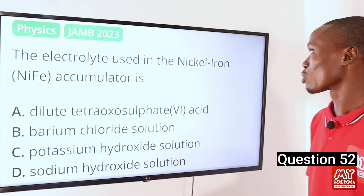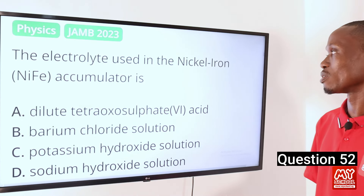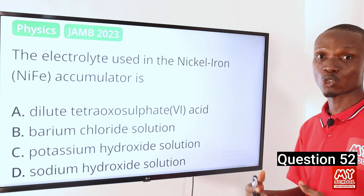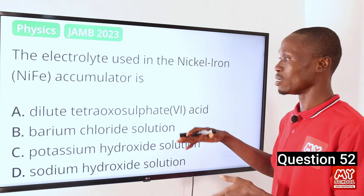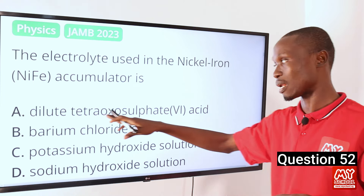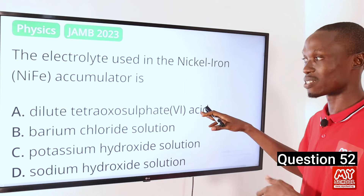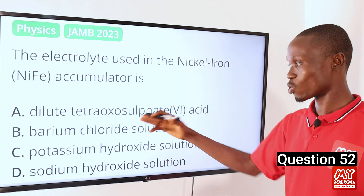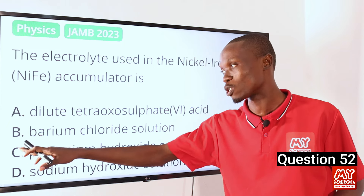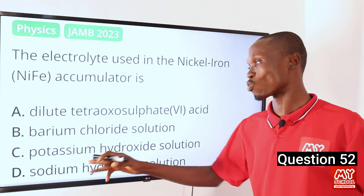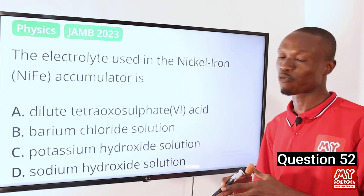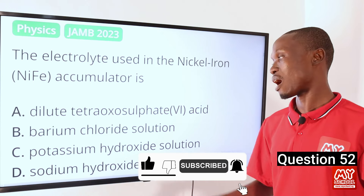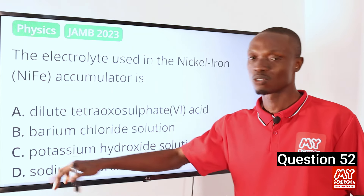Question 52. The electrolyte used in the nickel-ion accumulator is what? The electrolyte used in the nickel-ion accumulator is a strong alkaline. Option A is dilute sulfuric acid — an acid, not alkaline. Option B, barium chloride solution, is a salt. The answer lies between C and D since both are alkaline, but the correct answer is option C, potassium hydroxide solution, because it has high conductivity, a low melting point, and low cost.